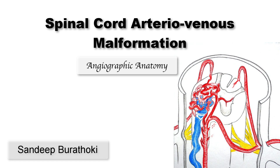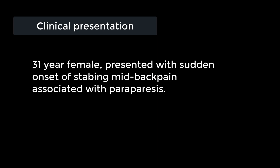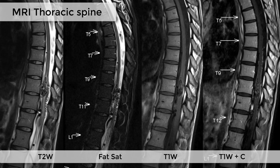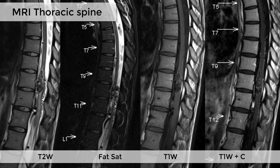In this video, we will discuss spinal cord AVM and its angiographic anatomy. A 31-year-old female presented with sudden onset of severe mid-back pain associated with paraparesis. MRI of the thoracic spine showed spinal cord AVM involving the lower thoracic cord at T10 level.